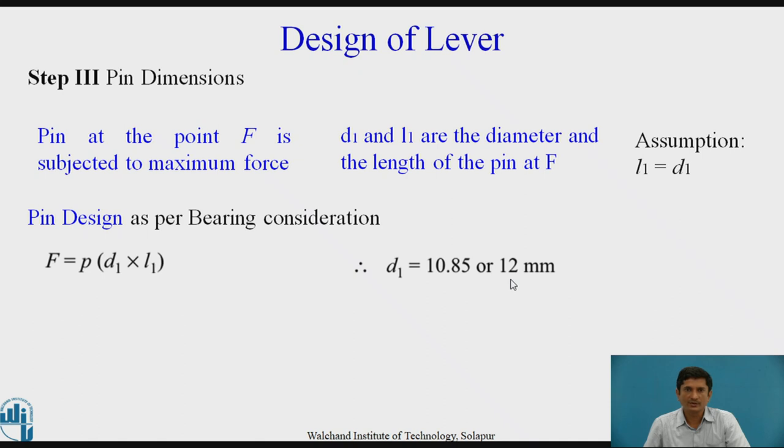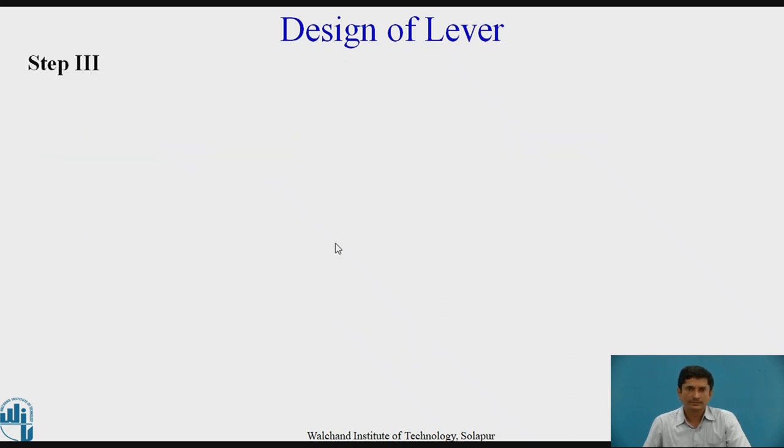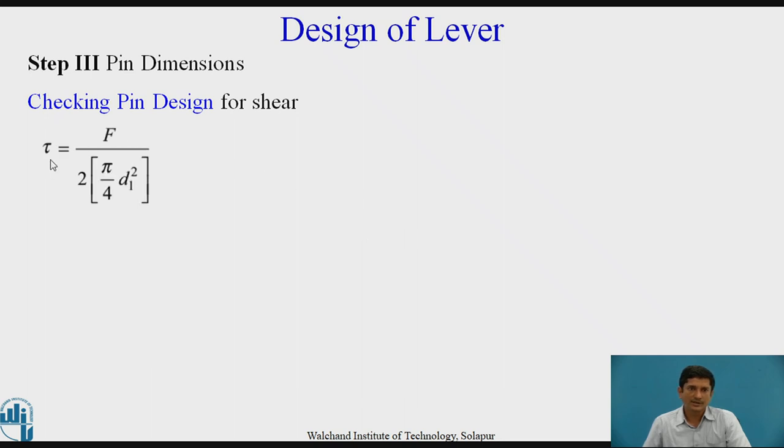Let us select some standard value, 12 mm, D1 and L1. Then checking this pin, as we have designed the pin, we need to check this pin for the shear. Shear stress is given by force upon, as it is a double shear, we need to take two times. The cross section is, in the shear, pi by 4 D1 square, where D1 is the diameter of the pin.